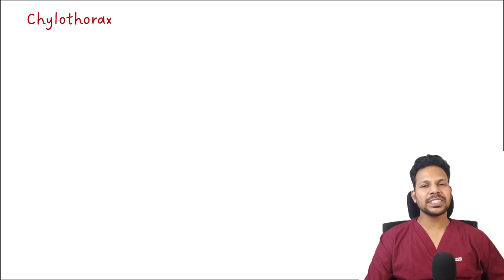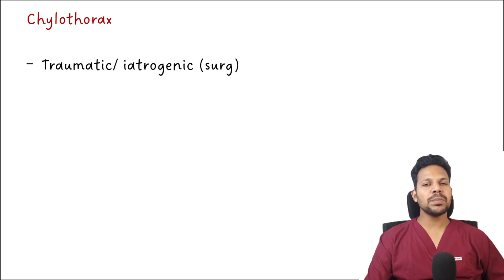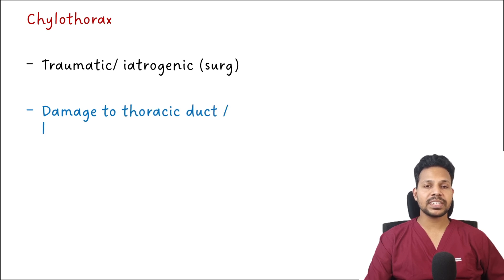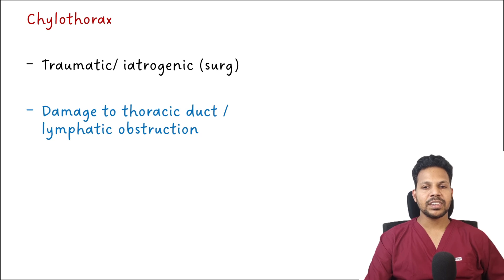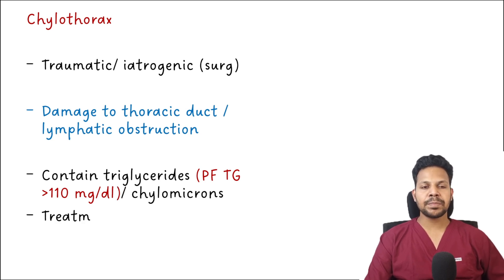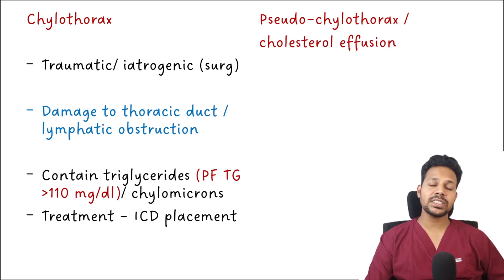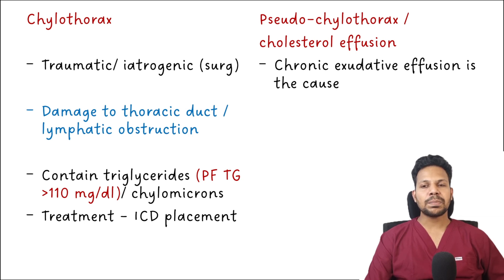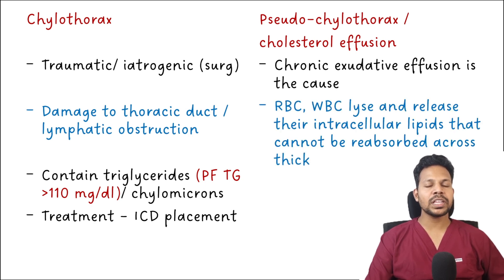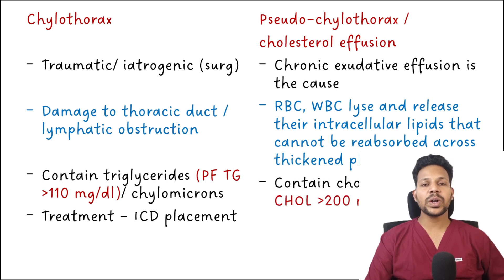Now let's look at two uncommon causes: chylothorax and pseudochylothorax. Chylothorax is commonly due to trauma or thoracic surgery causing damage to the thoracic duct or lymphatic obstruction, resulting in deposition of chylomicrons as milky fluid in the pleural space. Pleural fluid analysis shows triglycerides more than 110 mg/dL, and treatment is intercostal chest tube insertion. Pseudochylothorax is due to cholesterol deposition in the pleural space from chronic exudative effusion. The mechanism involves lysis of RBCs and WBCs releasing intracellular lipids not readily reabsorbed by thickened pleural membranes. Cholesterol levels are significantly elevated at 200 mg/dL.